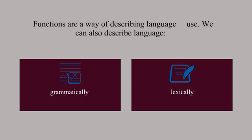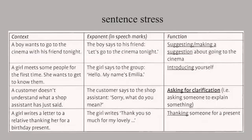We can also describe language grammatically or lexically through vocabulary. When we describe language through functions, we emphasize the use of the language and its meaning for the people who are in the context where it is used. The language we use to express a function is called an exponent. The pieces of direct speech in the middle column in the table are all examples of exponents.